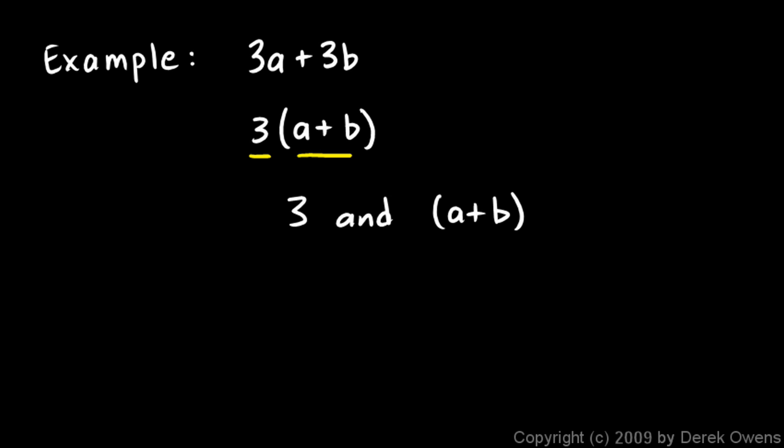Because you can see that if we multiply them, we have to distribute this 3. The 3 will get multiplied by the a, giving us the 3a, and it will get multiplied by the b, giving us the 3b. And those two things will be added together.